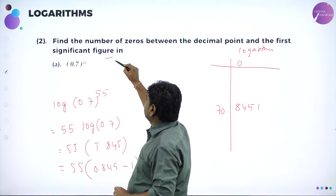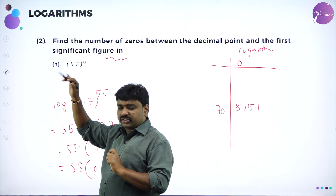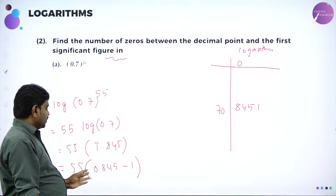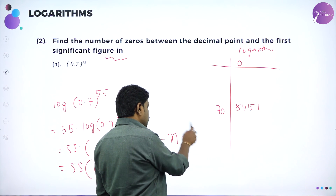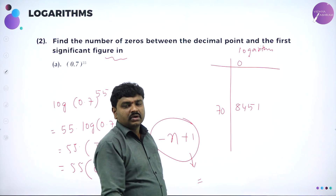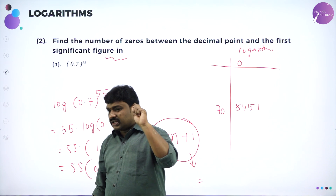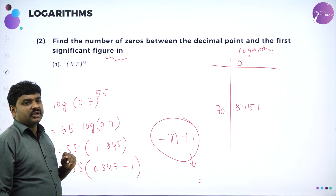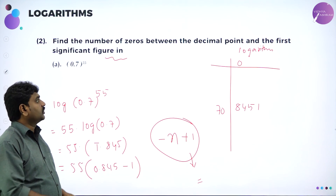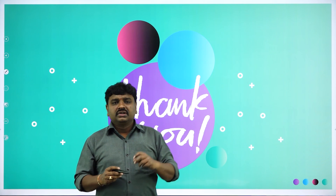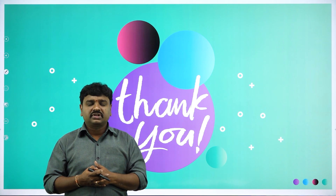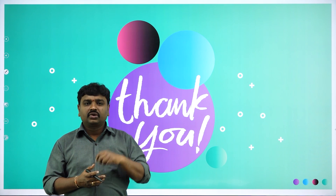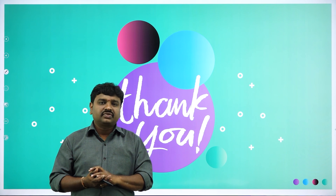The question asks how many zeros appear before the first significant figure. After simplifying using the calculator, whatever integer part (−n) you obtain, compute −n + 1 to find the number of zeros. The key method throughout is to always apply log to get the result. I hope all of you understood how to find anti-log, the number of digits before the decimal, and the number of significant zeros. Practice these problems. In the next session we will do more numericals involving simplification using log and anti-log. Thanks for attending.